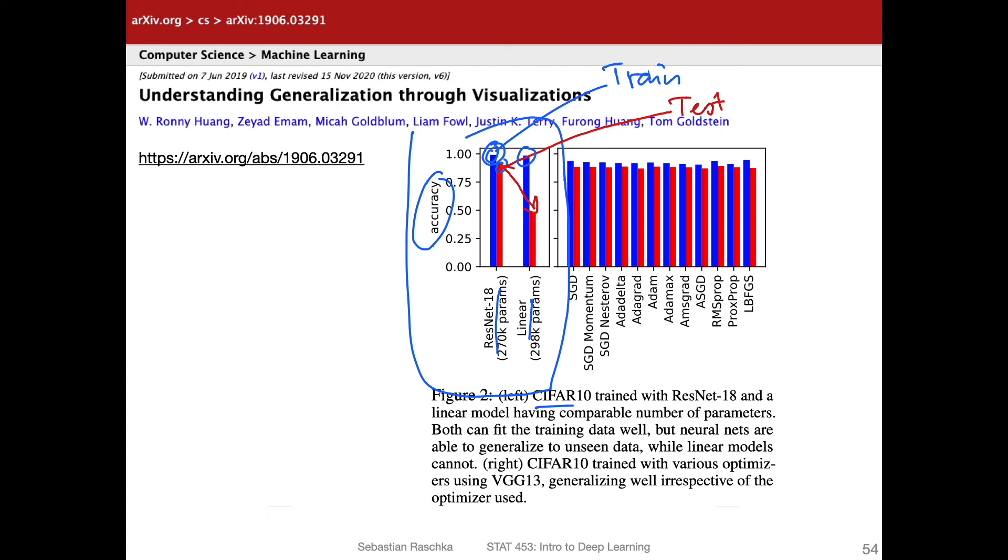However, in contrast to the architecture choice, here they trained VGG13, which is a different convolutional network. For this training, they used different optimization algorithms, for example, SGD, SGD with momentum, SGD with Nesterov momentum, or Adam here. You can see that while the training performance is slightly different, maybe the test set performance is almost identical. You can see that there's almost virtually no difference in the test performance, maybe one or two percent points.